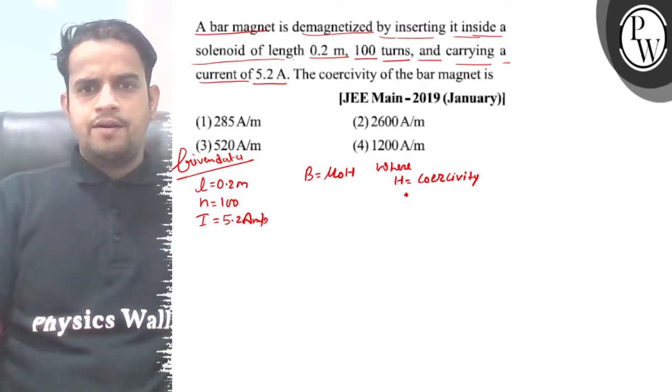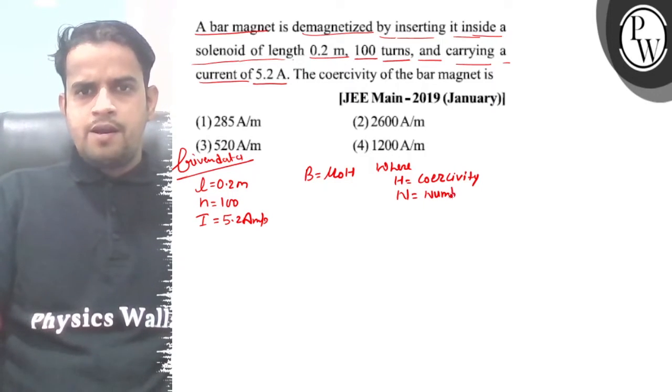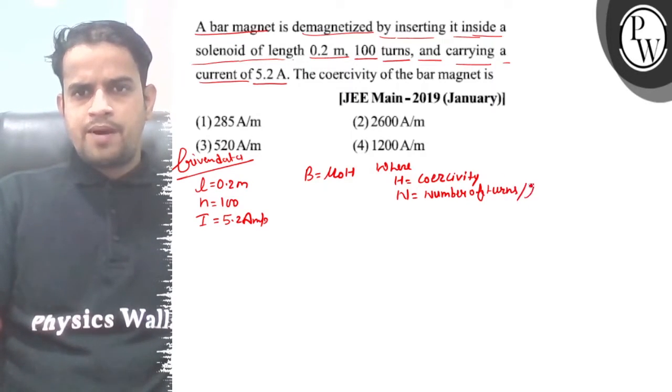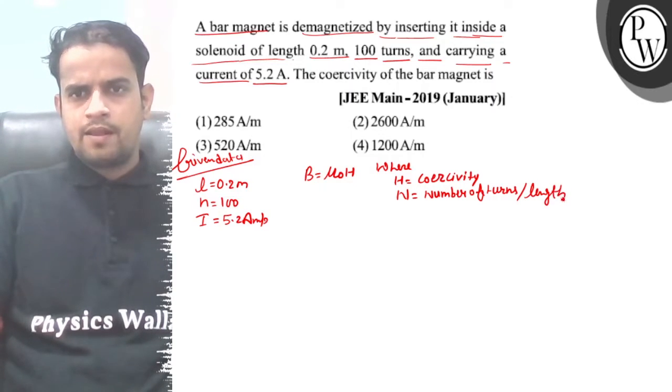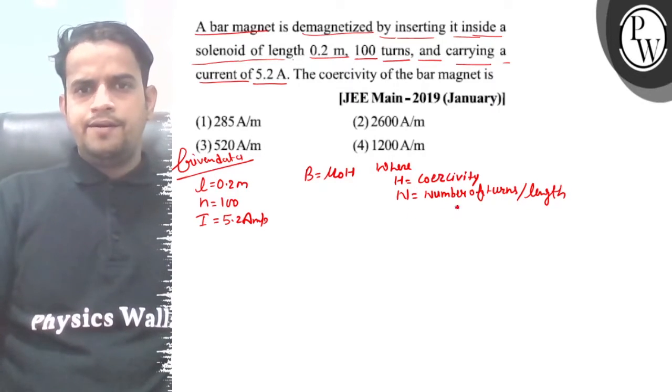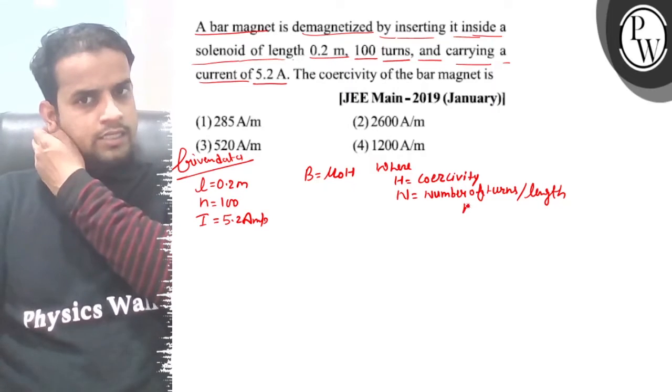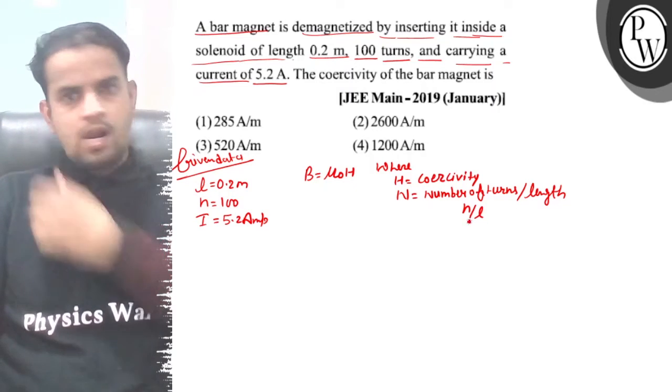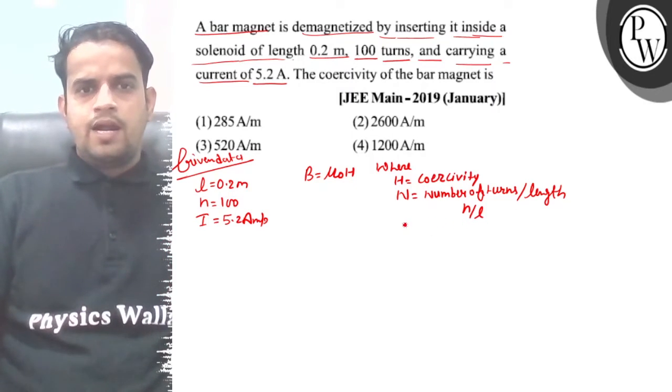Capital N equals the number of turns, small n equals the number of turns per length, and i equals the current.